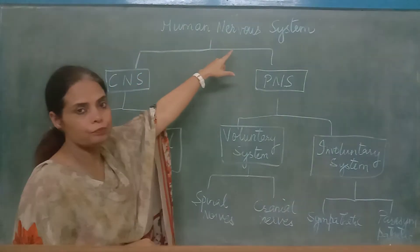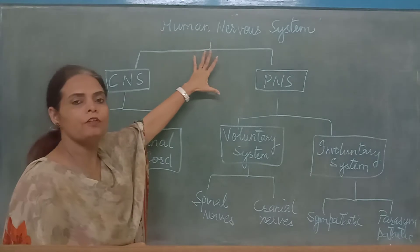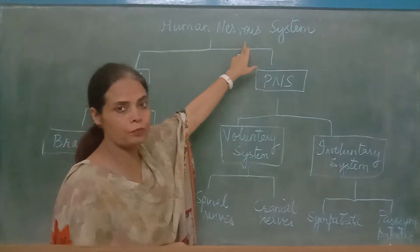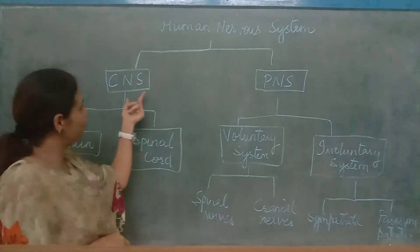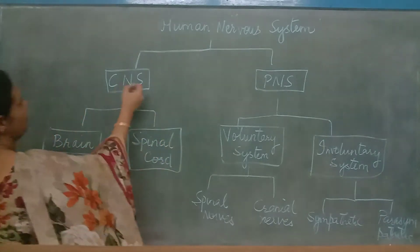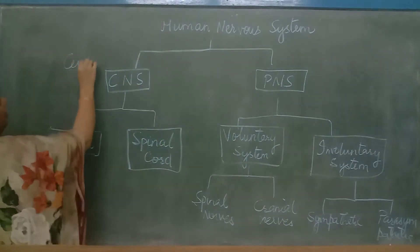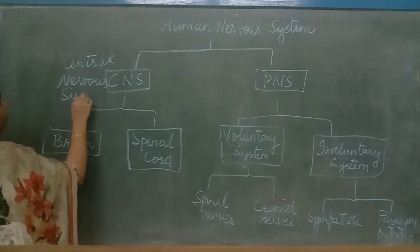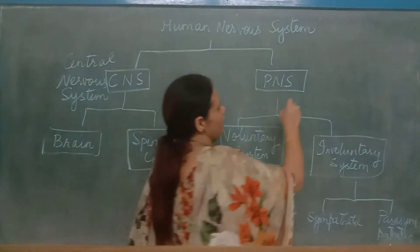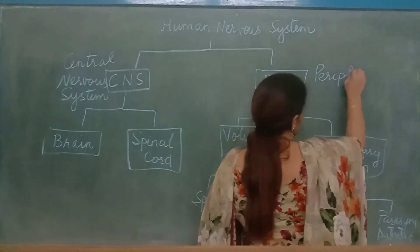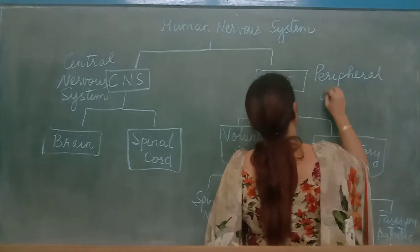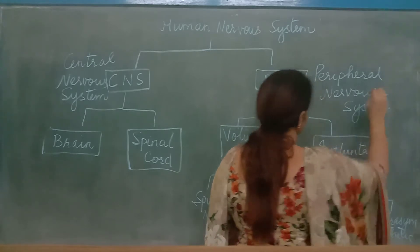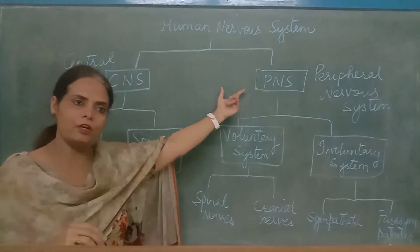Now the human nervous system. First of all, we will just lay an outline to know how it is. The human nervous system is divided into two parts. One is the central nervous system (CNS) and the second is the peripheral nervous system (PNS).